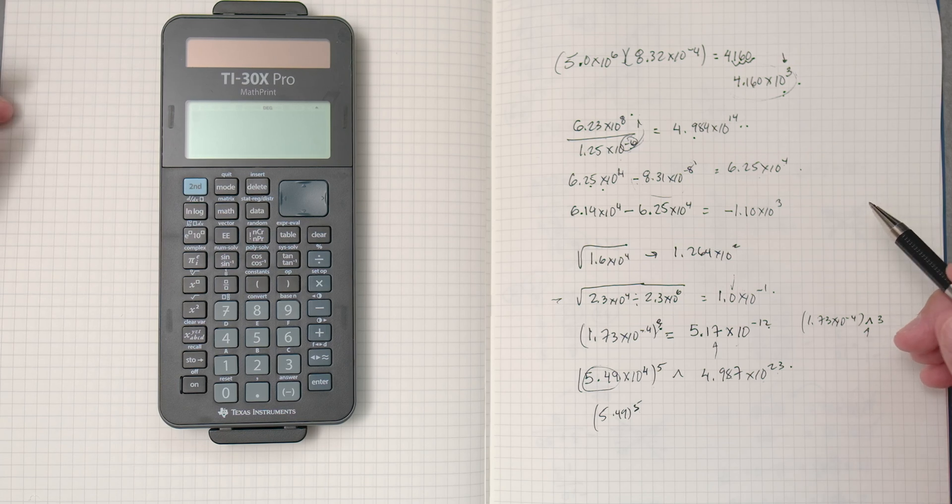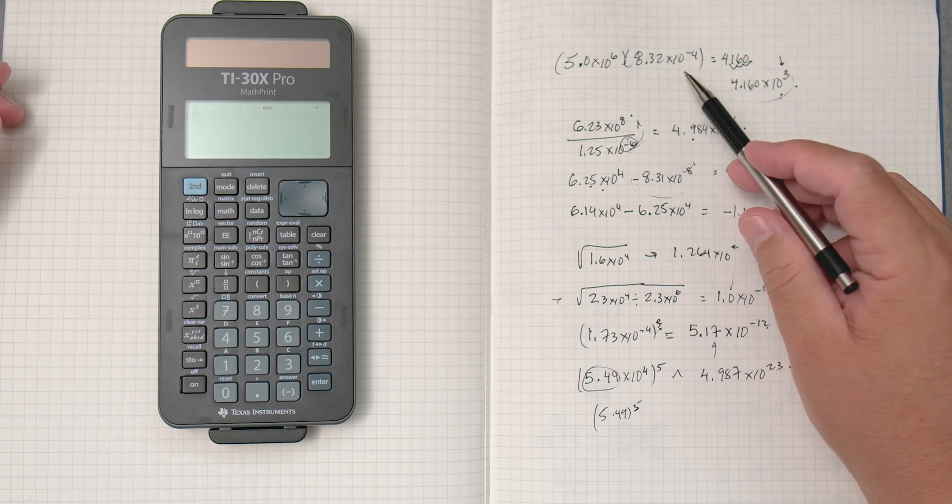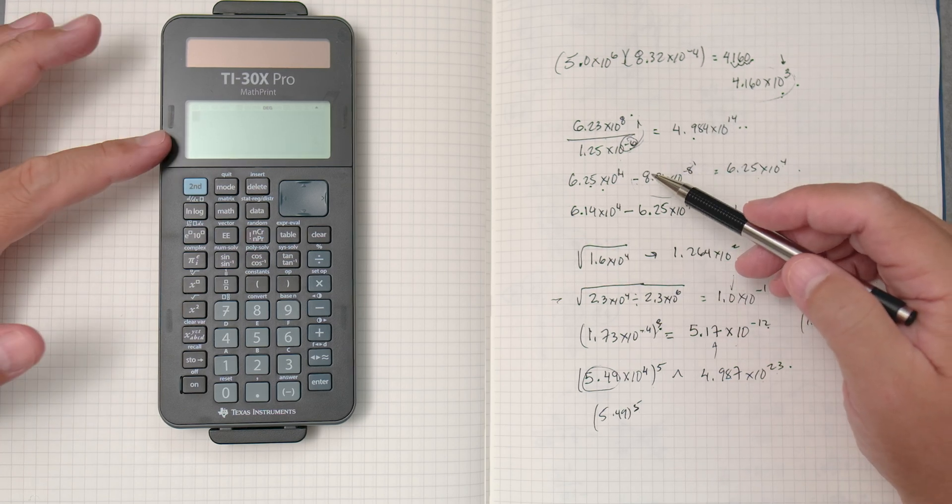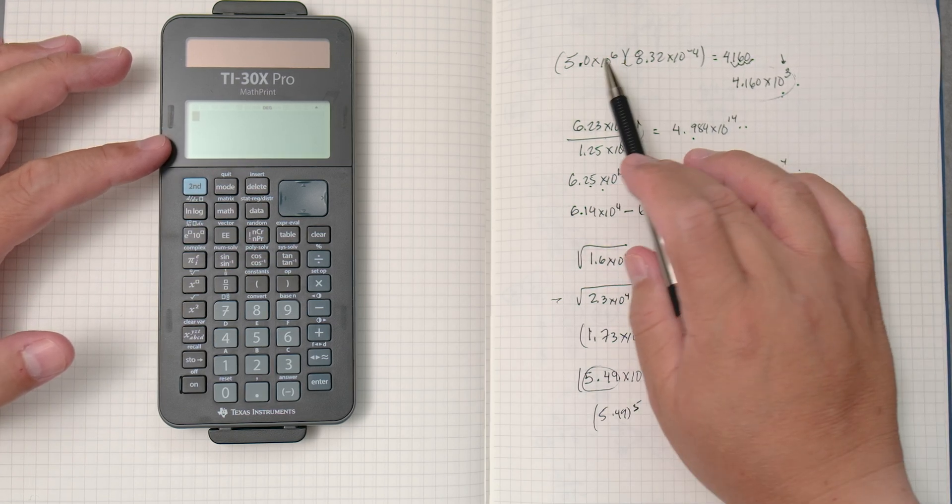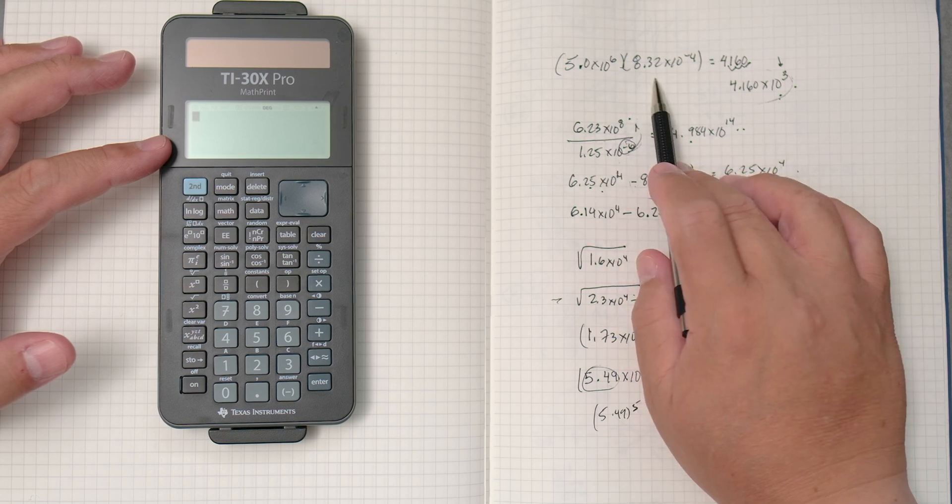Okay, in this video we're going to do scientific notation arithmetic using the TI-30X Pro. Okay, so let's multiply these two numbers here.